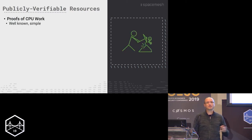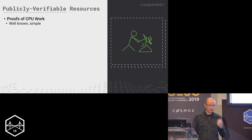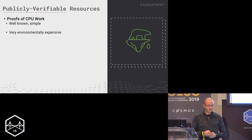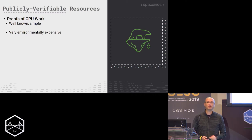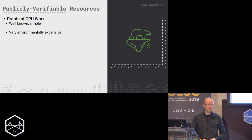Satoshi Nakamoto had the first idea of using proofs of work. They're very simple and well-known — they were known before Bitcoin. There's a problem with them though: they're very environmentally expensive. We've seen many talks about how much electricity Bitcoin is using, how expensive it is. Not such a good idea.